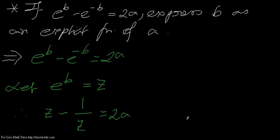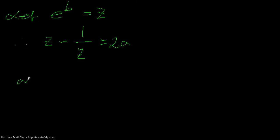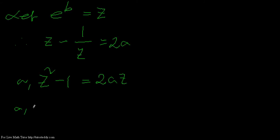Taking z as the common denominator, we get z squared minus 1 equals 2az. Bringing 2az to the other side, we have z squared minus 2az minus 1 equals 0.